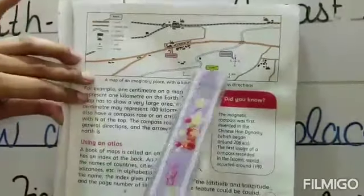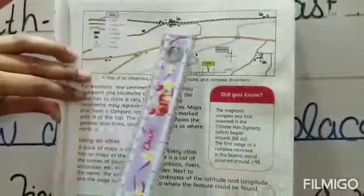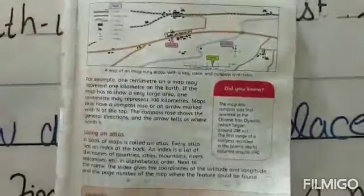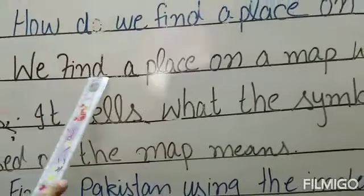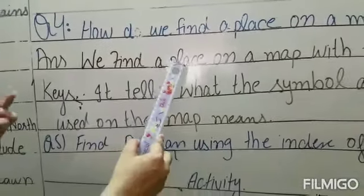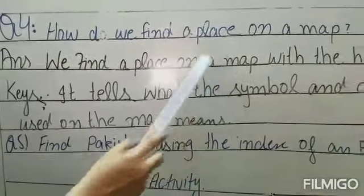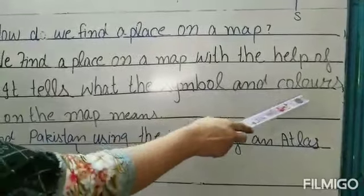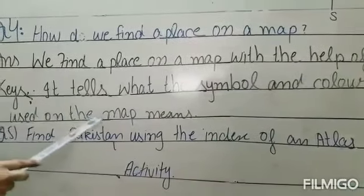The key helps you study the map and find the place you are looking for. In the map, the key tells you what symbols and colors are used so you can identify different features.